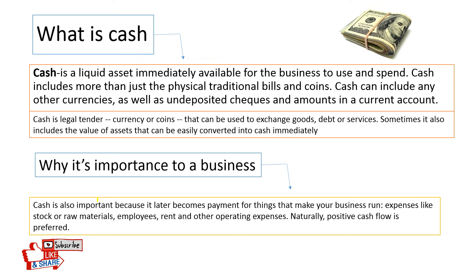So what is cash? Cash is a liquid asset immediately available for a business to use and spend. Cash includes more than just the physical traditional bills and coins — it includes any other currencies, as well as undeposited checks and amounts in a current account. Cash is a legal tender — currency or coins that can be used to exchange goods, debt, or services. Sometimes it also includes the value of assets that can be easily converted into cash immediately.